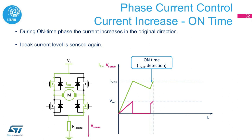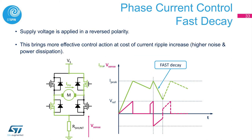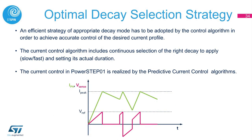After the decay phase, which is timed by a fixed T-off time, the current will rise again during on time. The peak of the current is sensed again, and the next phase will be fast decay. During fast decay, a supply voltage is applied in reversed polarity — this brings more effective control, but at the cost of higher current ripple, higher noise, and power dissipation. An efficient strategy to select the right decay mode must be adopted by the control algorithm to achieve accurate control for the desired current profile. The current control algorithm includes continuous selection of the right decay and setting its actual duration.